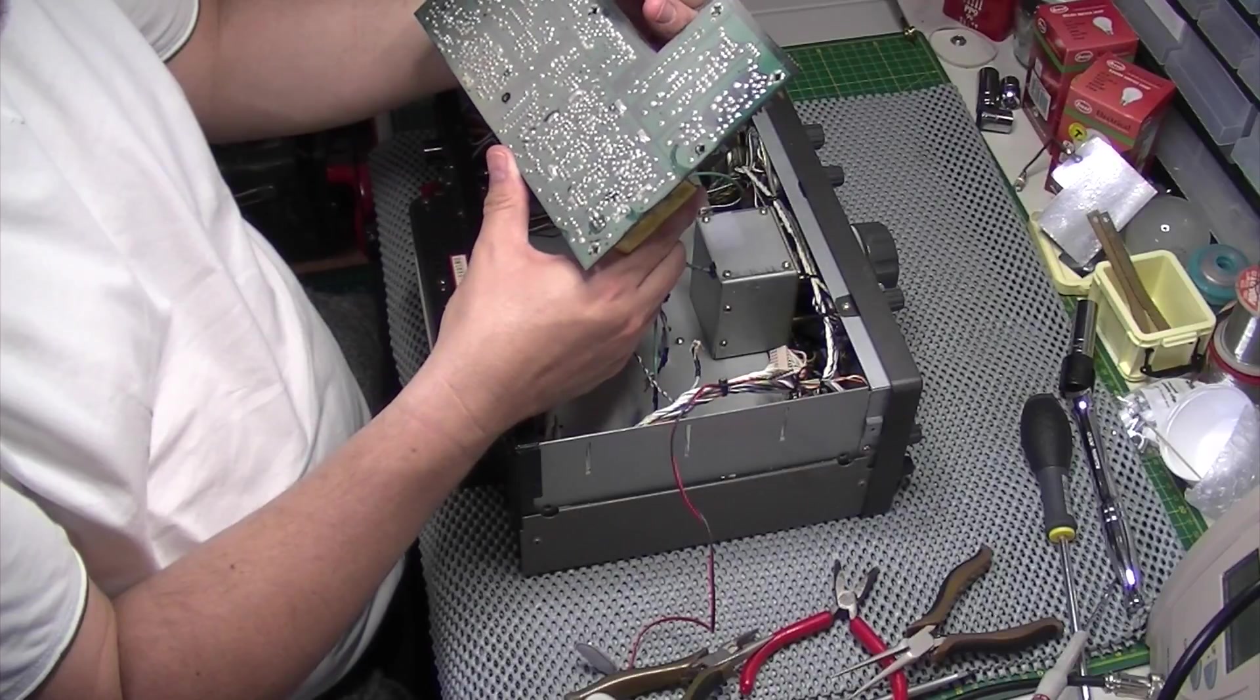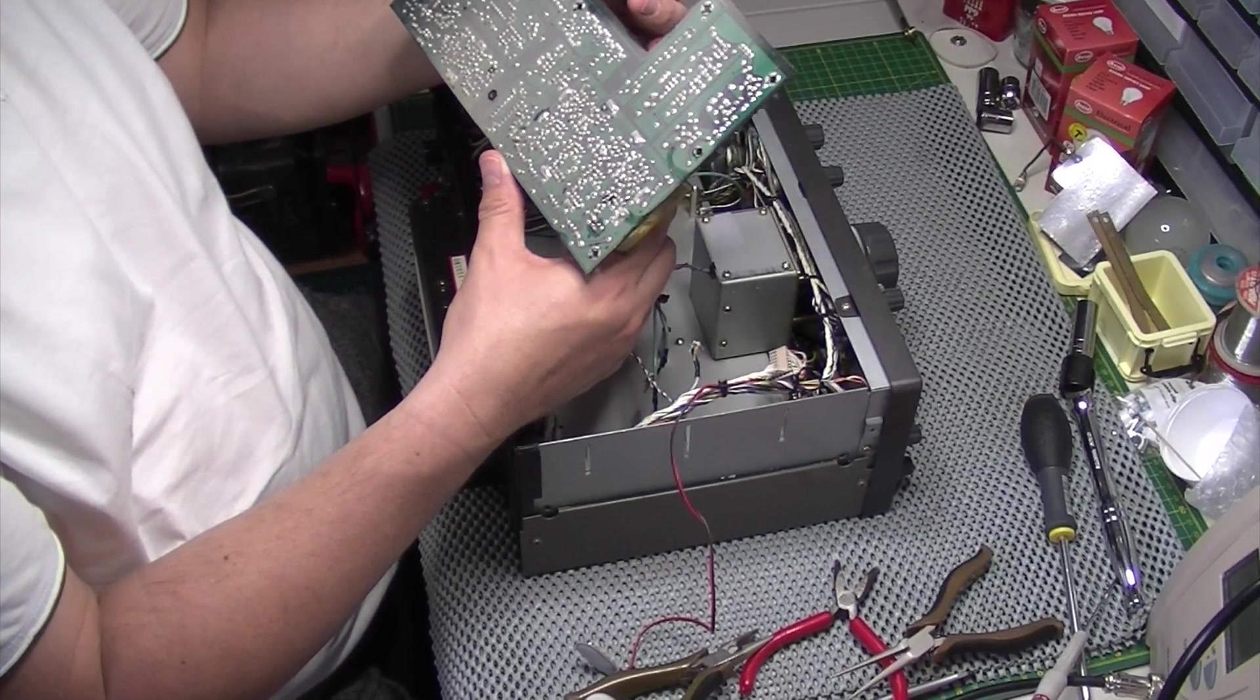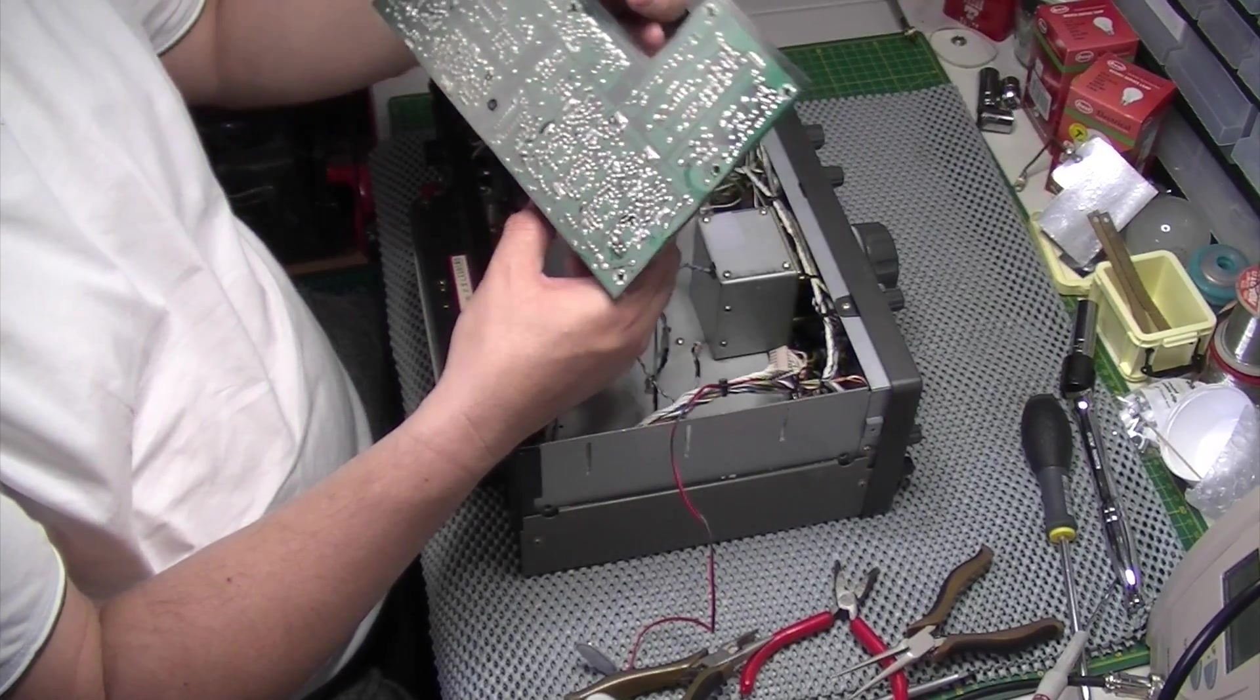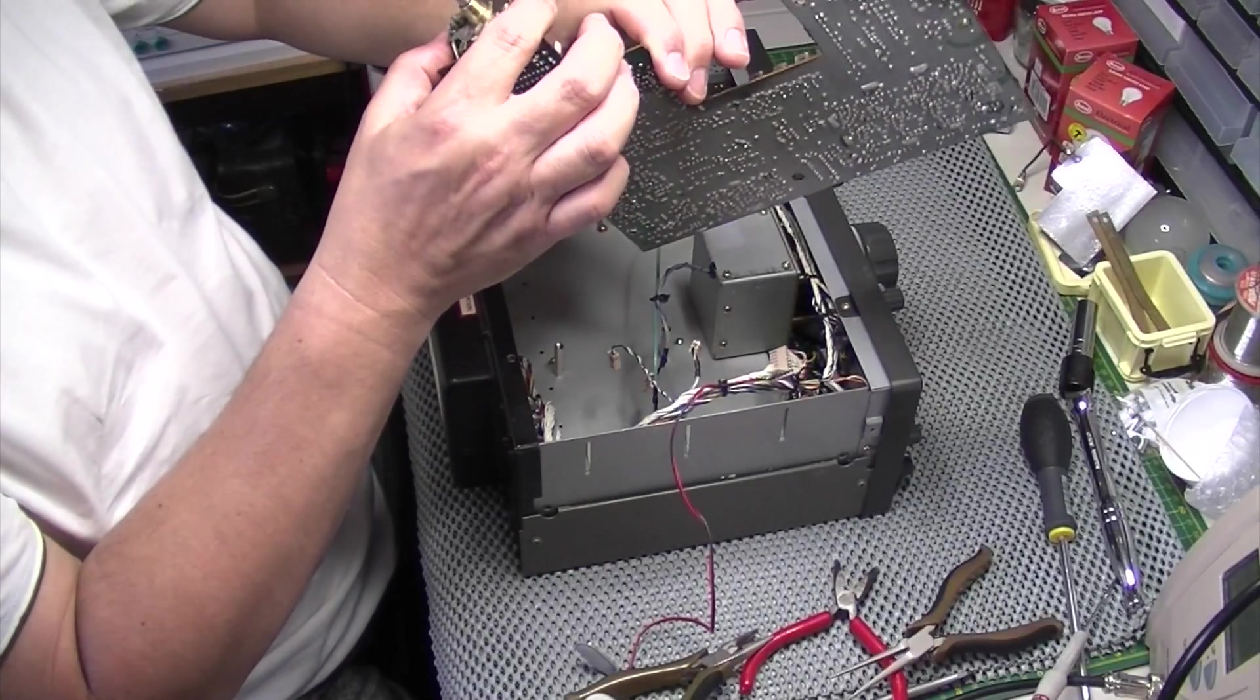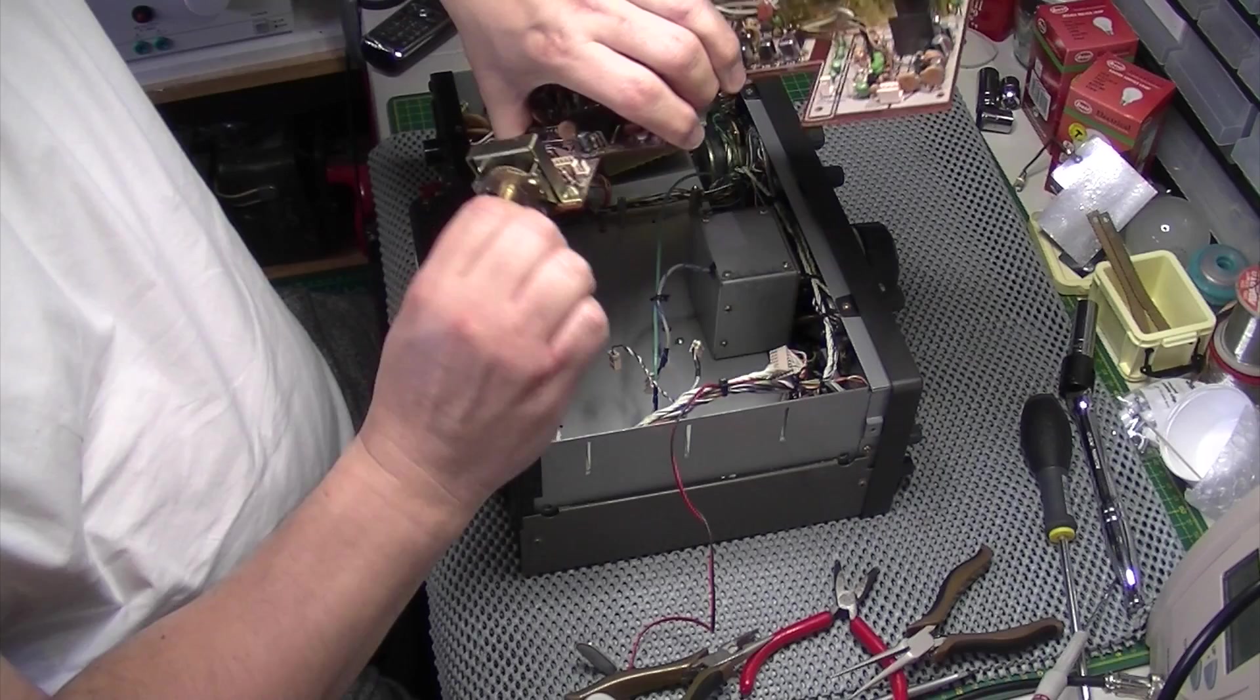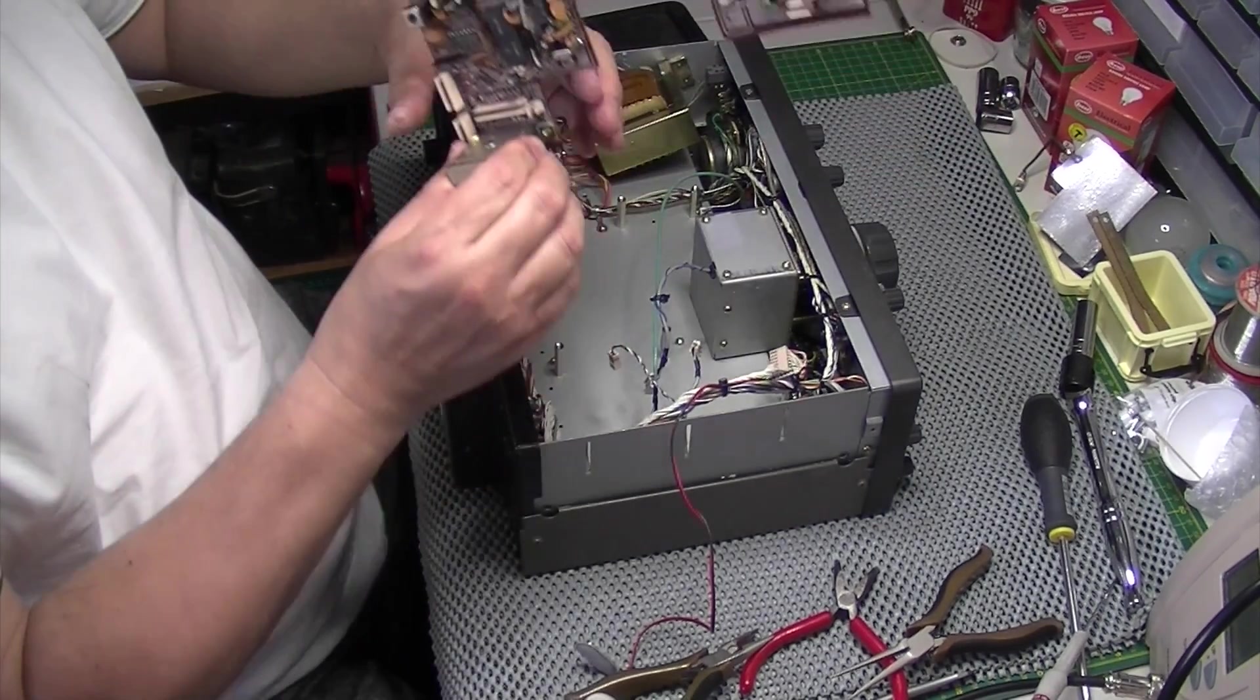So I'm going to inspect the underside of the board. Just to have a look to see if there's any signs of any dry joints. Which I very much doubt with these sets but you never know. There we go. And then we're going to get to grips with this. Tune in the band switch.